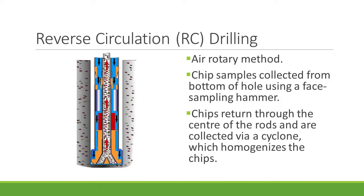Reverse circulation drilling is an air rotary method whereby chip samples are collected from the bottom of the hole using a face sampling hammer. RC drills utilize a slowly rotating double walled rod and a heavy steel hammer. High pressure air is pumped down the rods between the outer wall and the inner tube. The air passes over the bit and is sucked back up the inner tube along with the broken fragments of rock that have been crushed by the hammer. The chips are passed through a cyclone where the entire sample interval is homogenized, then dumped into a bag where they are sampled by the geologist and technician.